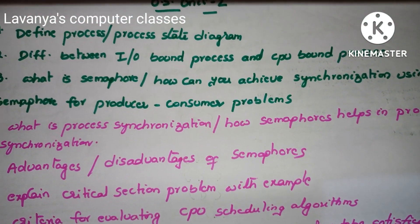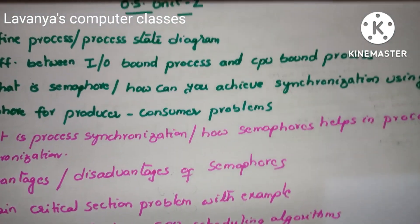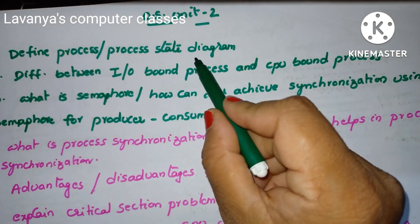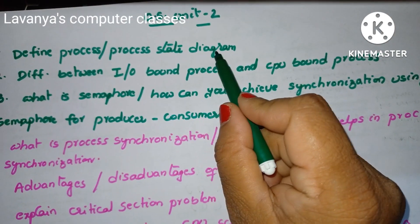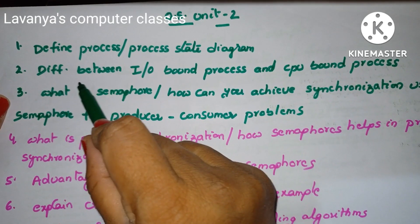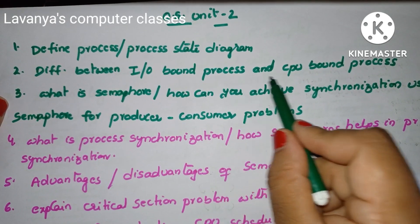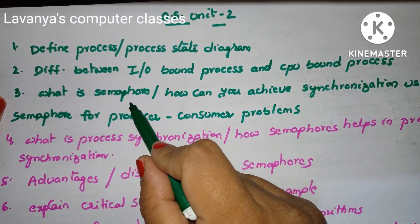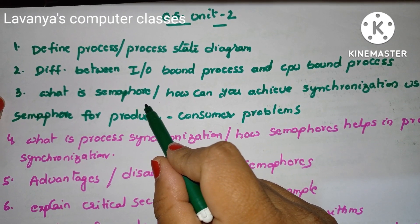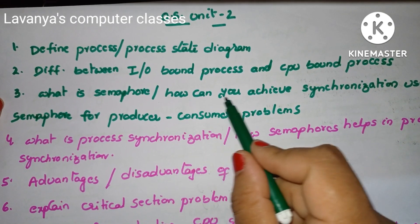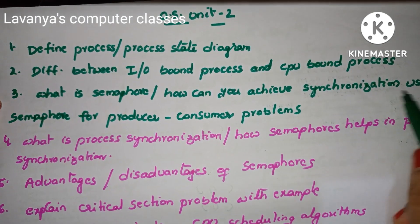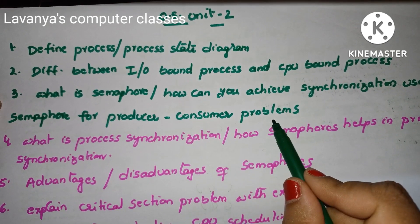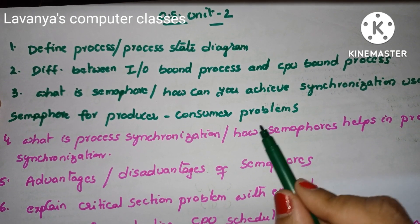Next, unit 2. First one is define process and explain process state diagram. Next, difference between I/O bound process and CPU bound process. Very important question: what is semaphore? How can you achieve synchronization using semaphore for the producer-consumer problem? Very very important question.